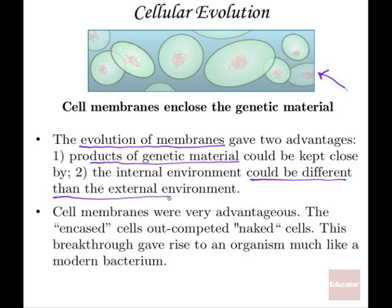The inside of the cell could be more concentrated or even less concentrated than outside, depending on the environment, based on the way the membrane regulated itself. These cell membranes, when they were acquired, were very advantageous. If we think about natural selection, the cells that had these membranes were much better at survival than the cells that didn't have them, and eventually gave rise to organisms like the modern bacteria.